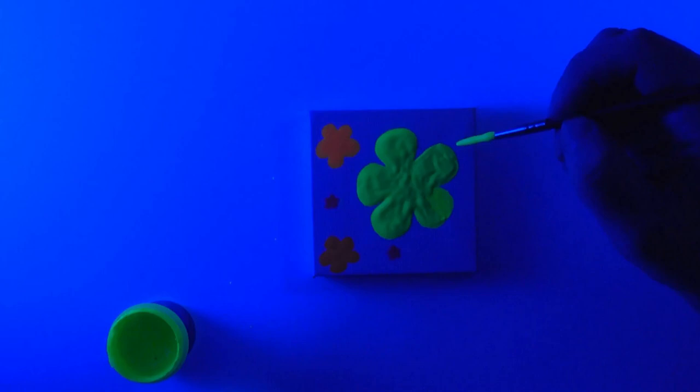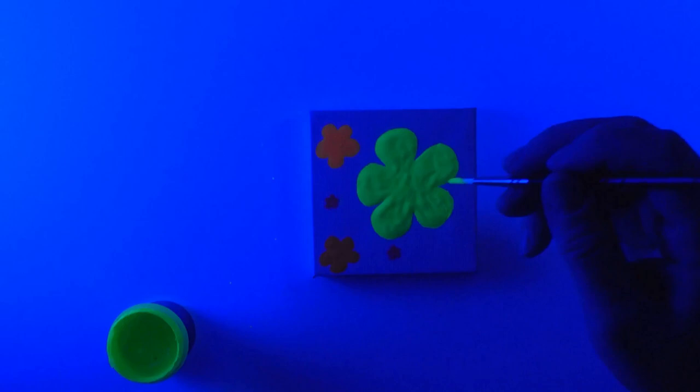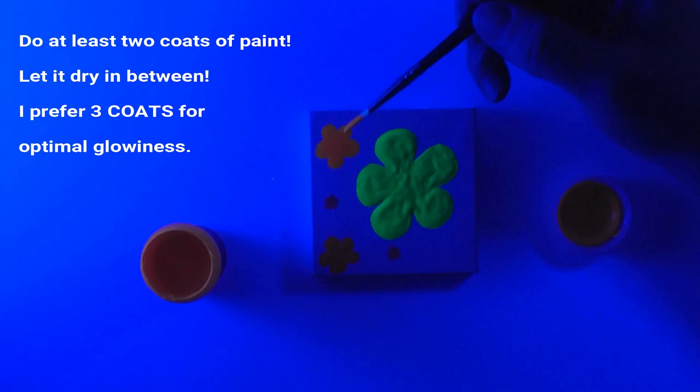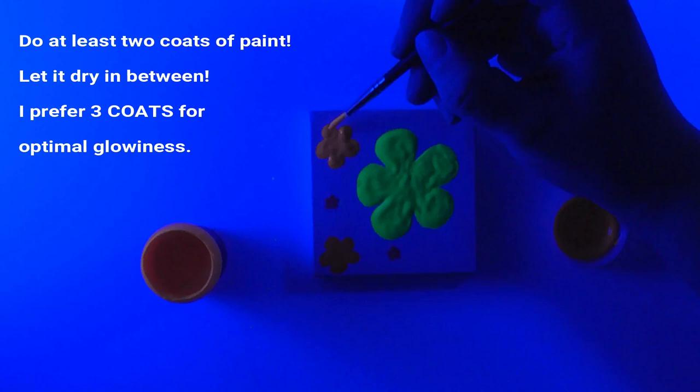All right, so the other thing you need to know is you need to do multiple coats of this paint. In this little tiny painting I did three coats of the colored paints, with the exception of the little tiny dots that I used as the centers of the flowers. I only did one coat of that because I figure there's already three coats of glowing paint behind it, so it's probably going to glow pretty well and I think it does.